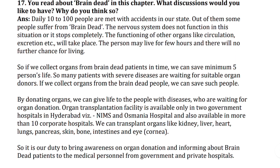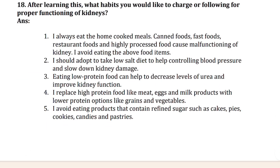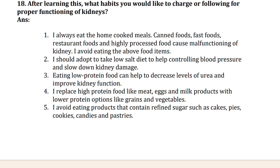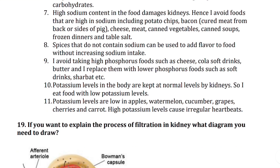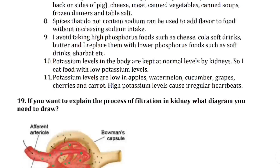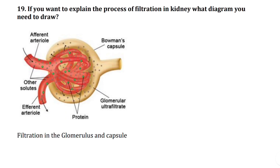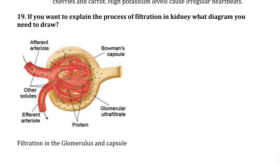List the things that make up the excretory systems of human beings. Then question 17 covers brain-related content in this chapter. Question 19: if you want to explain the process of urine formation in the kidney, what diagram would you need to draw? That covers everything in this chapter.